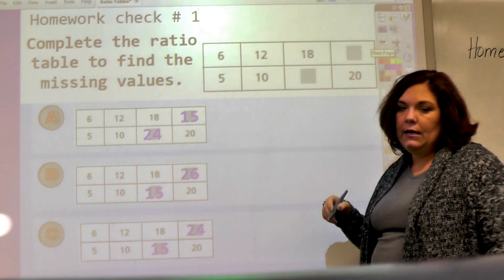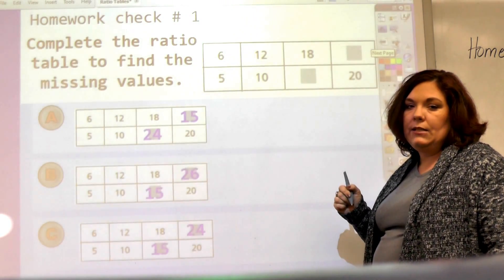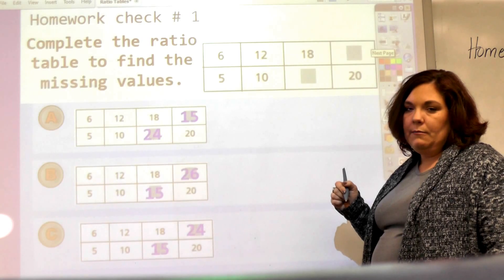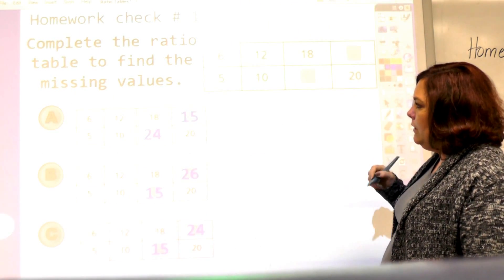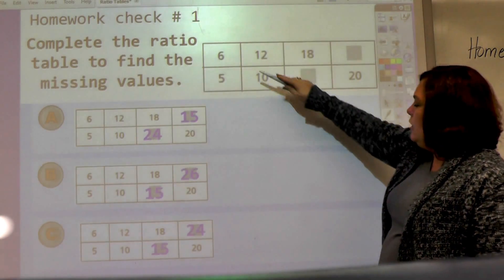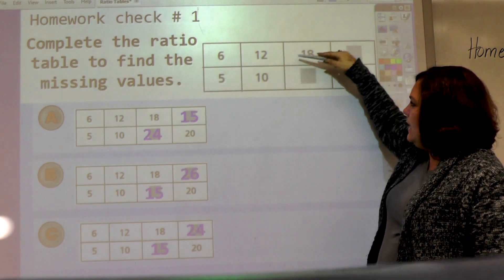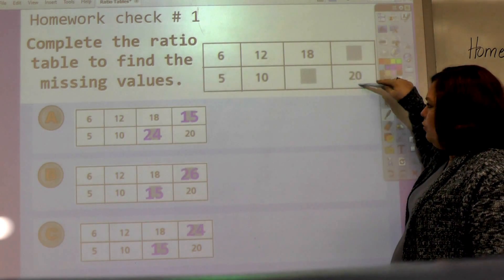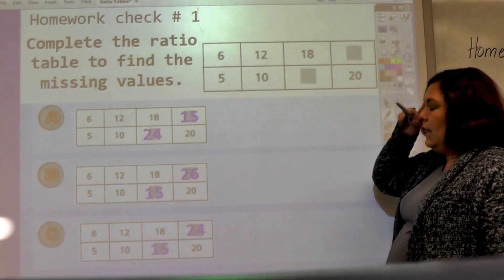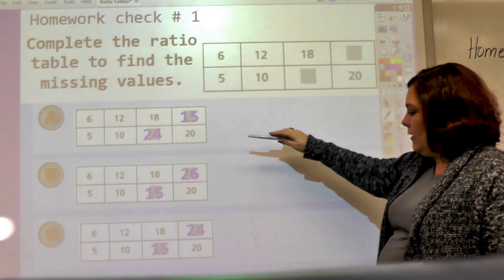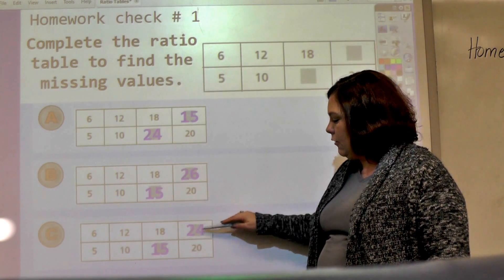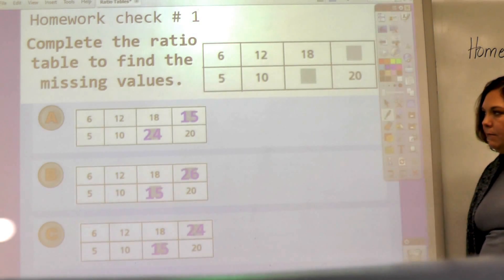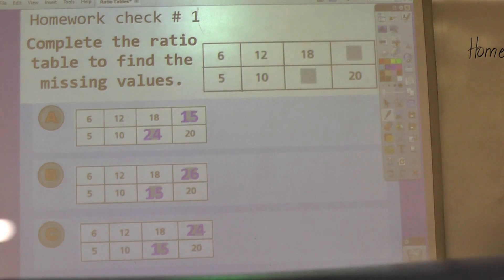Here's your homework check. It's three questions on three different slides, so you need to pause in between and solve these. I'm going to give you a few seconds for each one. This is complete the ratio table to find the missing values. You have 6 to 5, 12 to 10, 18 to blank, and blank to 20. Which would fill in these boxes? You have three choices: either 15 and 24, 26 and 15, or 24 and 15.